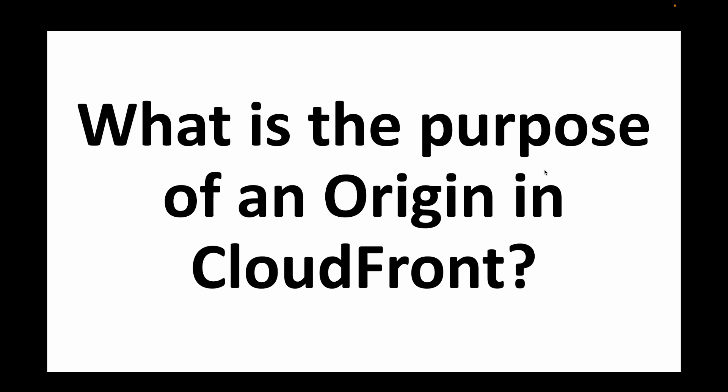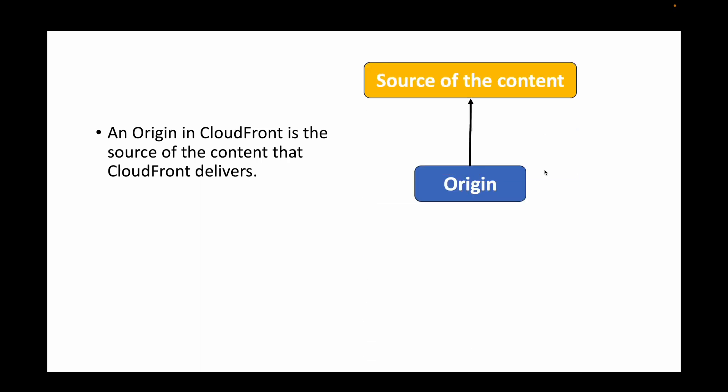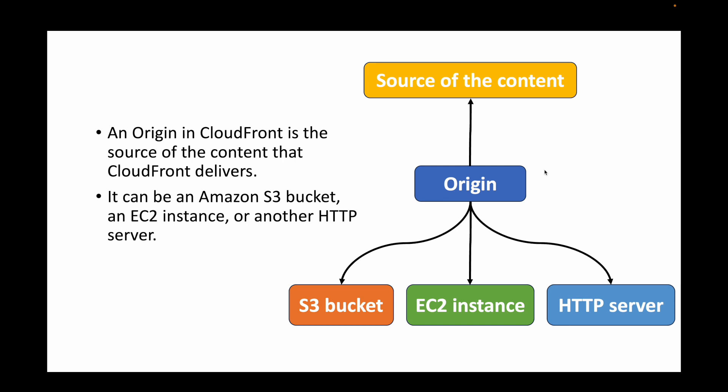The next question is: what is the purpose of an origin in CloudFront? The origin acts as the source of your content — wherever you place the data you want to deliver. The origin can be an S3 bucket, an EC2 instance, or any HTTP server. That original data is then replicated out to many edge locations, where it is stored as a cache.